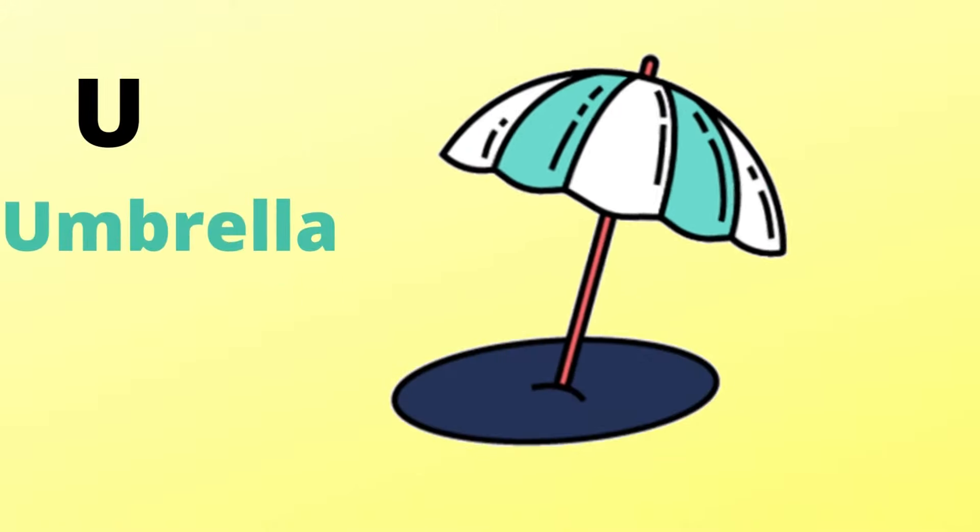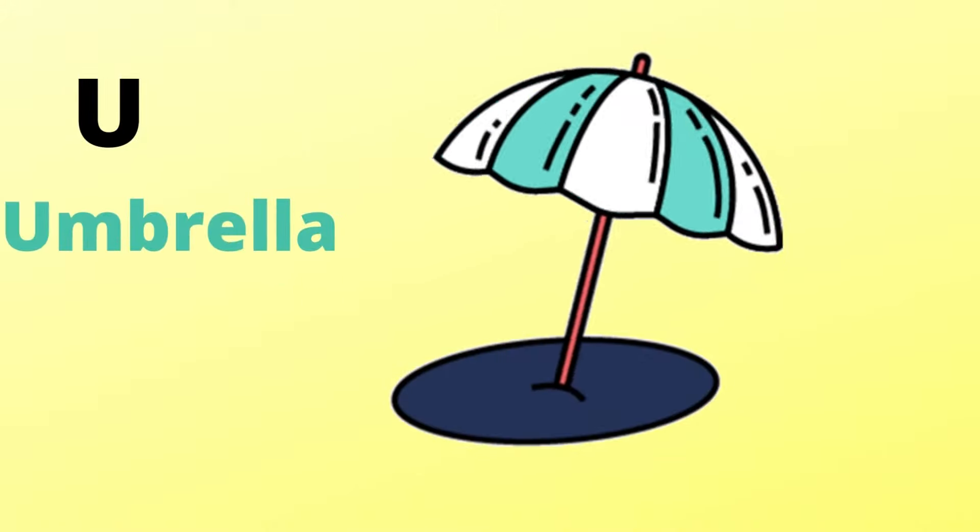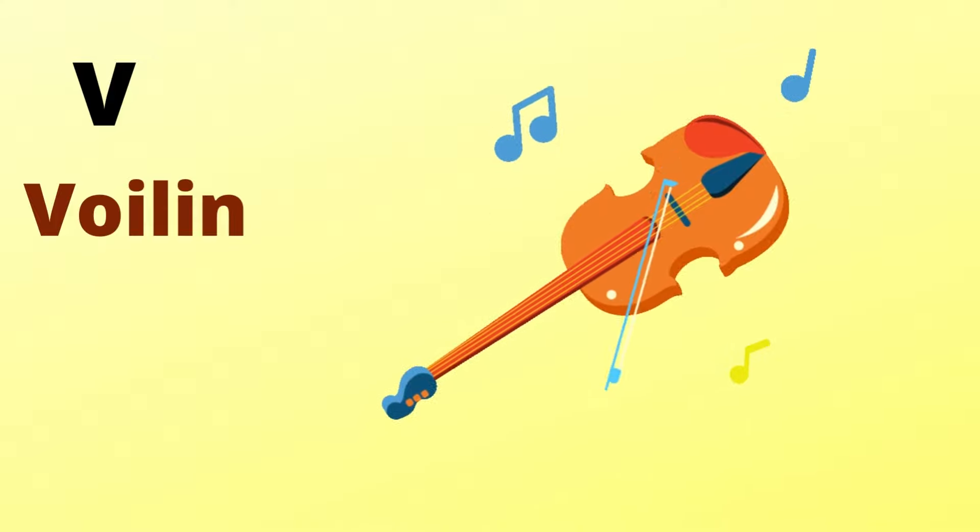U is for umbrella, u-u-umbrella. V is for violin, v-v-violin.